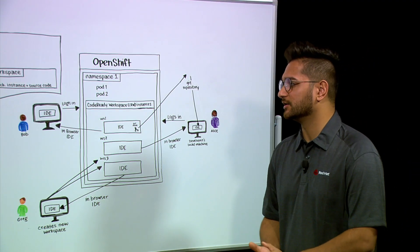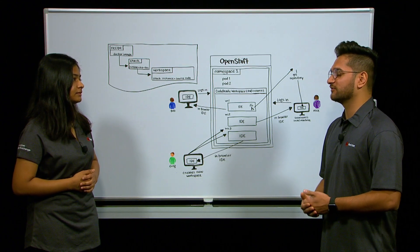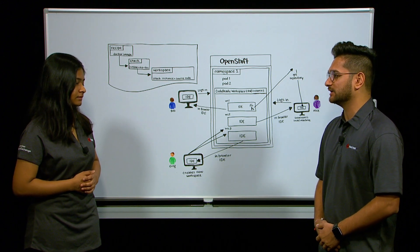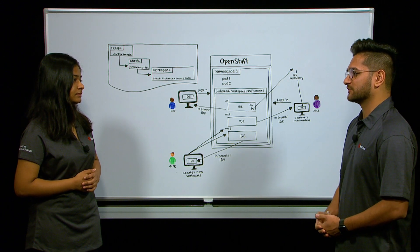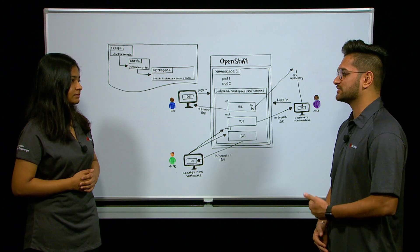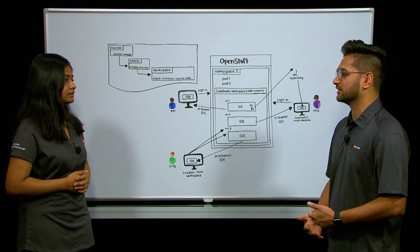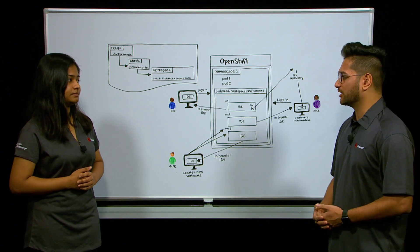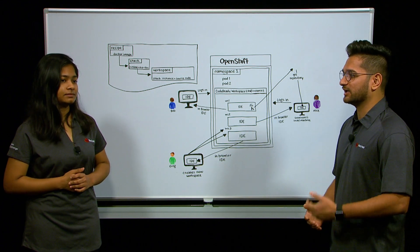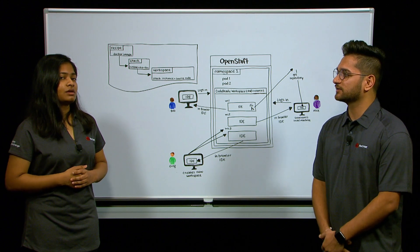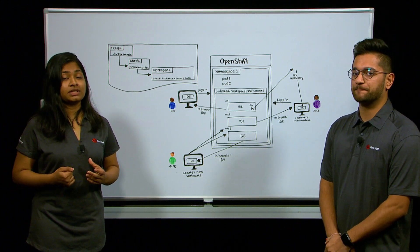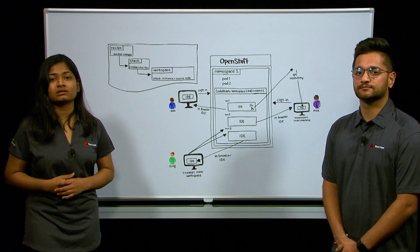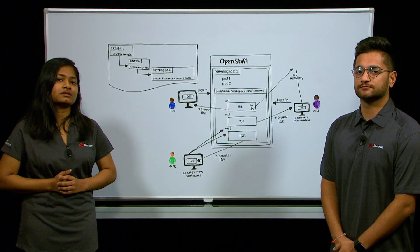So just to recap: Code Ready Workspace is an existing Red Hat tool that offers secure OpenShift workspaces with an in-browser IDE and enables large teams to work collaboratively by sharing all of the dependencies, tools, and utilities needed for a shared development environment. Is that correct? That's exactly correct. So if somebody wanted to get more information on Code Ready Workspaces or cloud-native application development, they can reach out to their Red Hat account executive or go to redhat.com/services to get a conversation started.